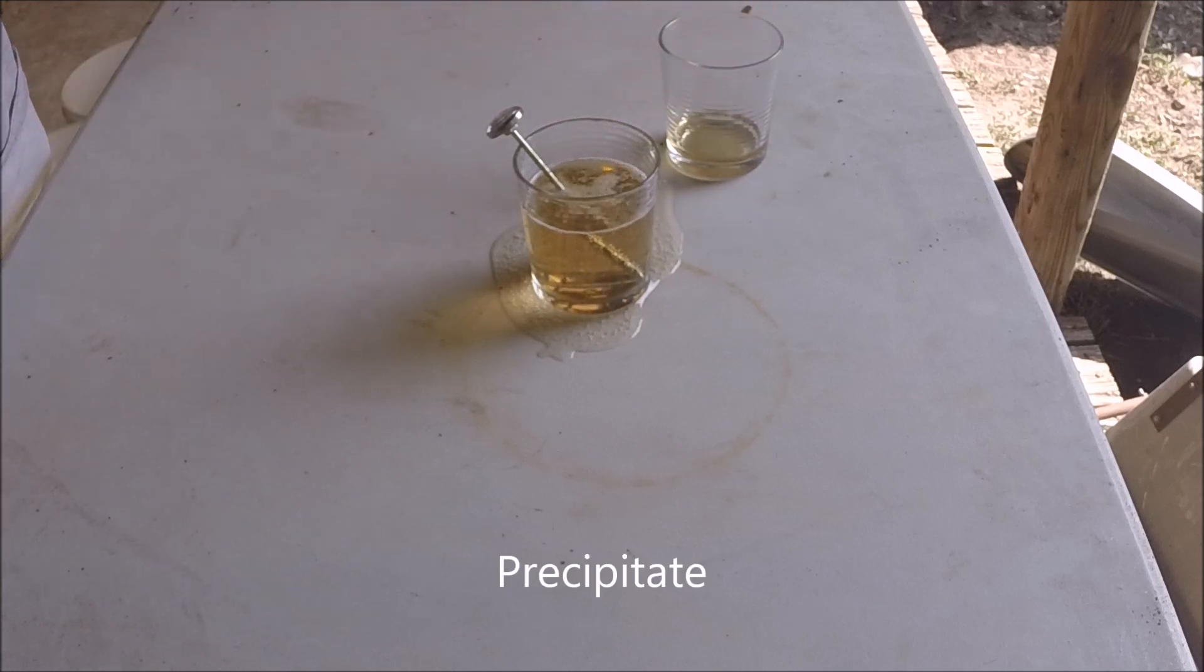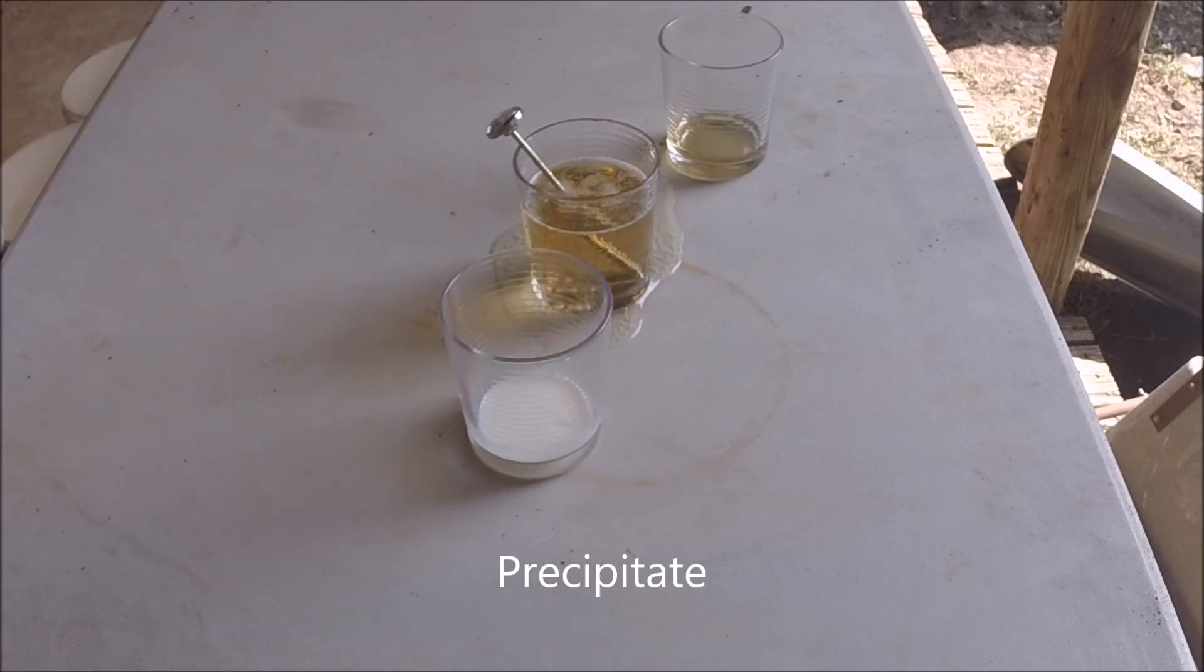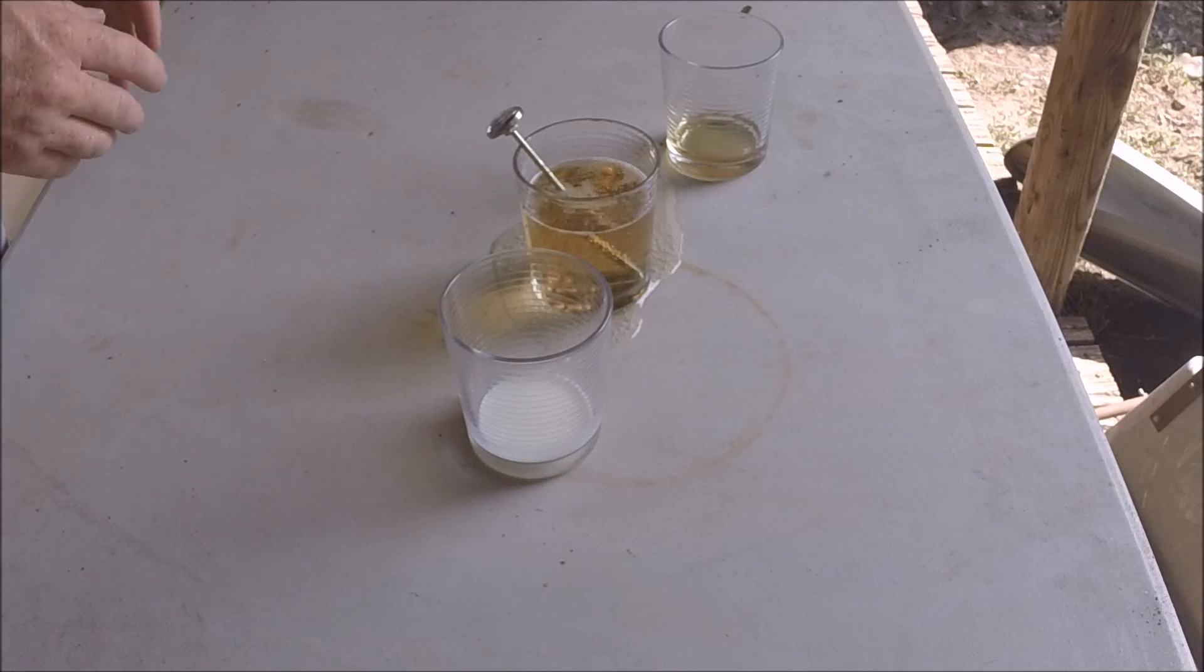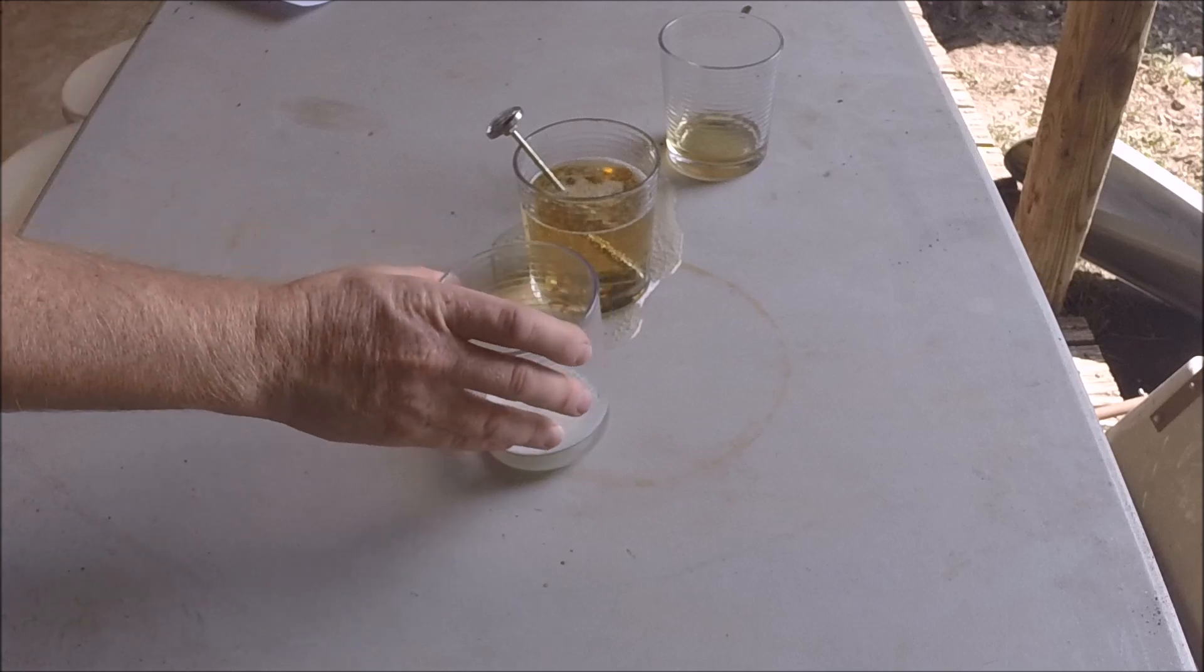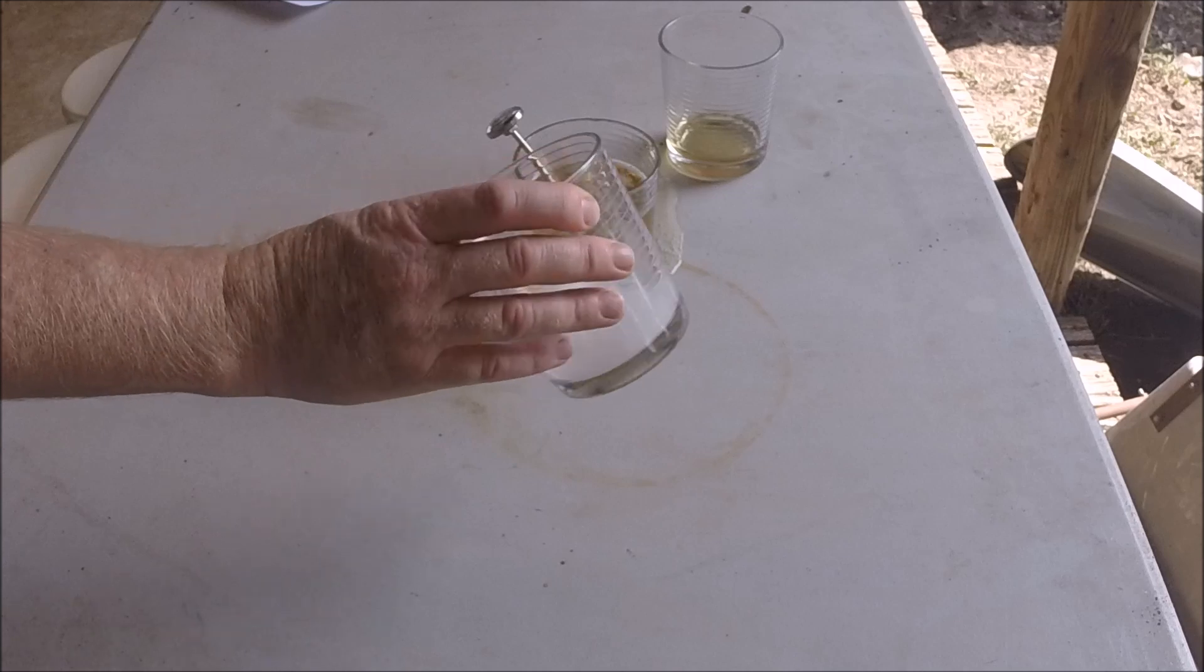The formation of a precipitate is another example. A precipitate is a substance that forms and separates from a solution. Right here it would be a solid. Right here I have liquid milk. There's no solid in that. It's just all liquid.